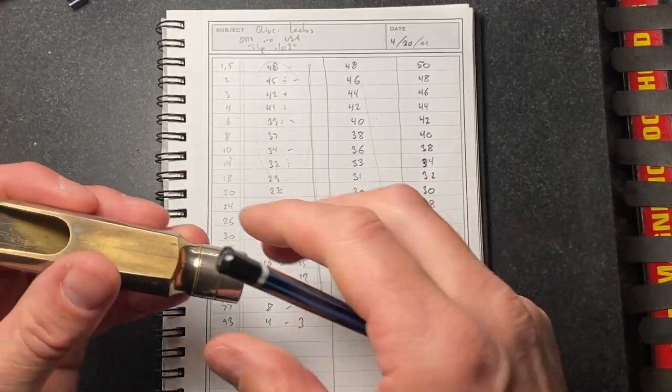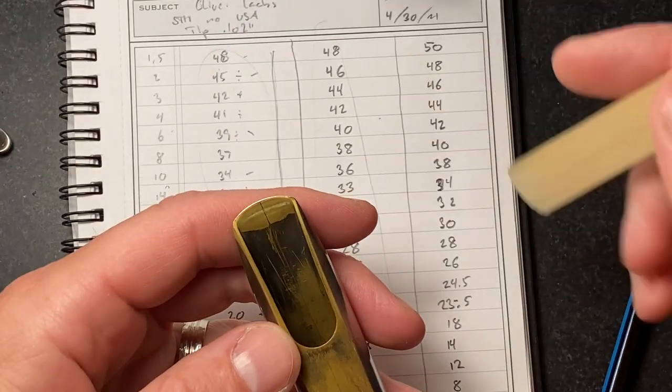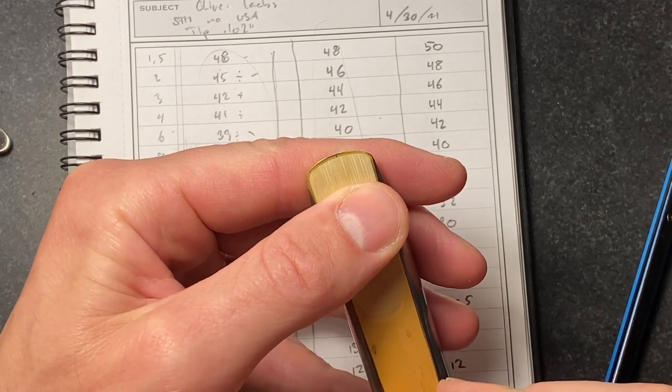When you look at the mouthpiece you have the baffle being too high right here and a super shrill facing. So this mouthpiece is going to be quite ridiculous. One more thing that's a little weird about this mouthpiece is that the tip rail doesn't match.